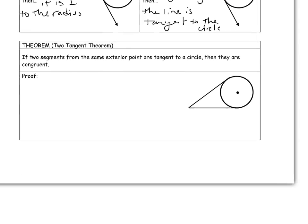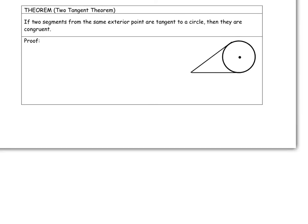So our last theorem is called the two-tangent theorem. This says if two segments from the same exterior point are tangent to a circle, then they are congruent.